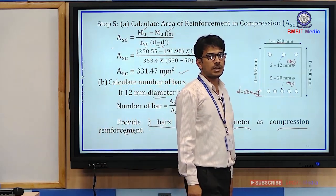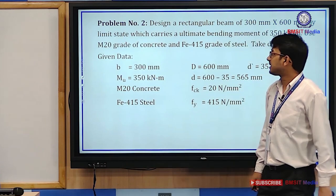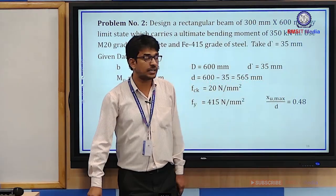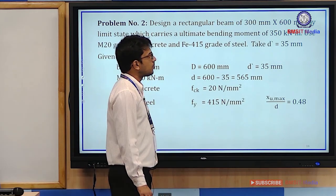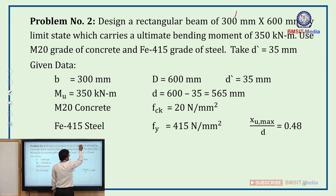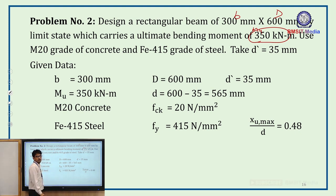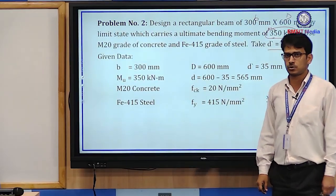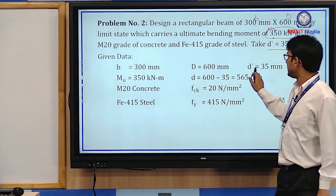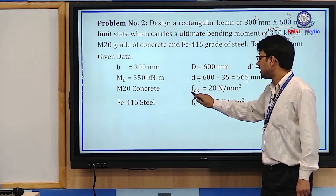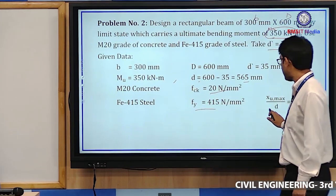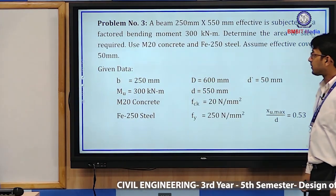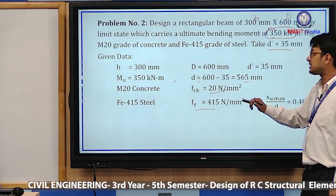Now let's look at practice problems. Problem 1: Design a rectangular beam of size 300 mm × 600 mm by limit state method, which carries an ultimate bending moment of 350 kN·m. Use M20 grade concrete and Fe415 grade of steel. Effective cover d' = 35 mm, so d = 565 mm. Since Mu is directly given, skip Step 1 and start from Step 2.